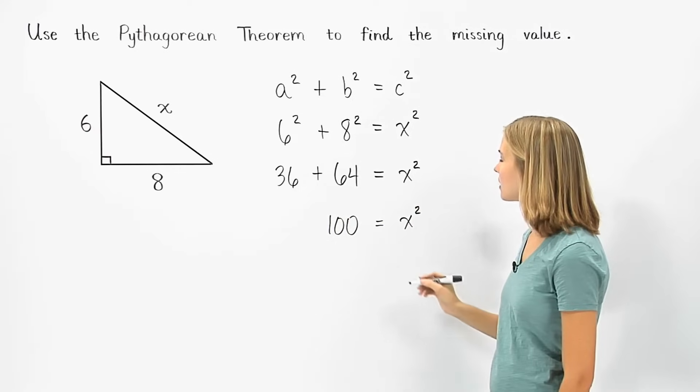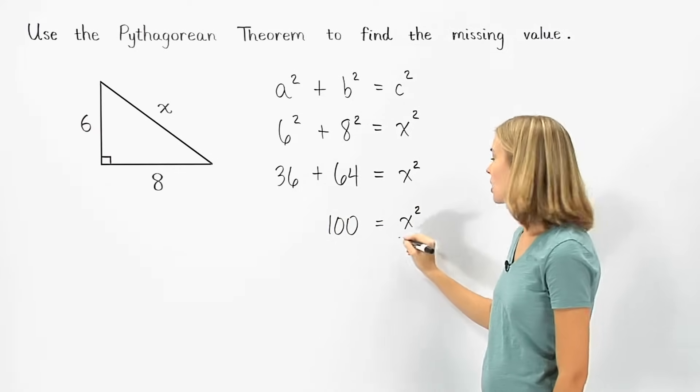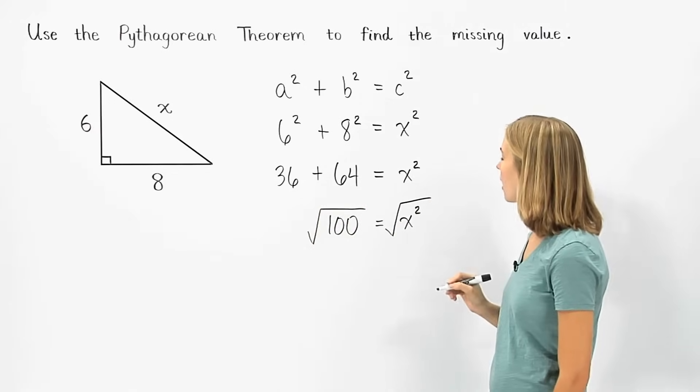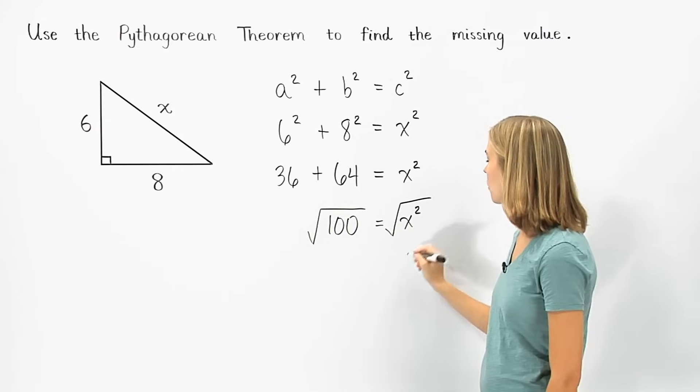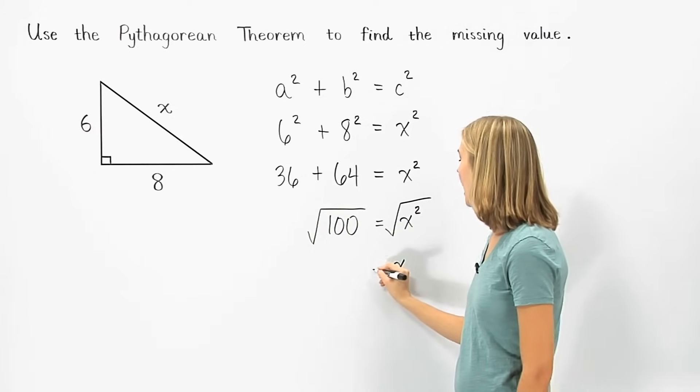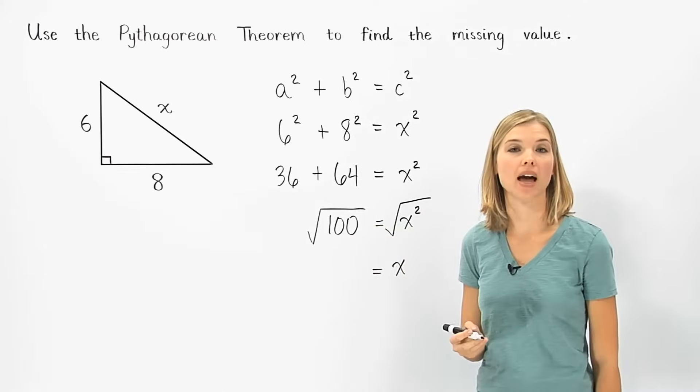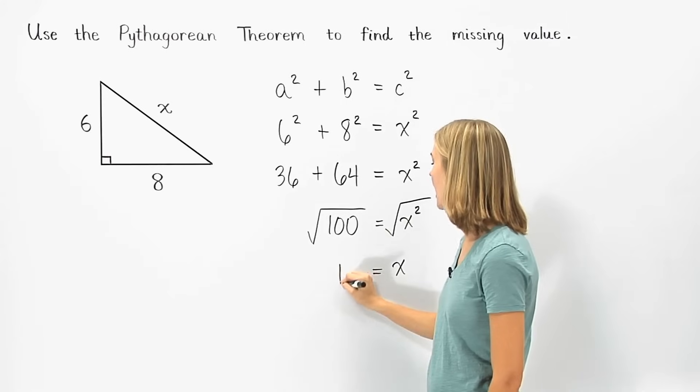Now to get x by itself, since x is squared, we take the square root of both sides of the equation. On the right, the square root of x squared is x. And on the left, since 100 is a perfect square, 10 times 10, the square root of 100 is 10.